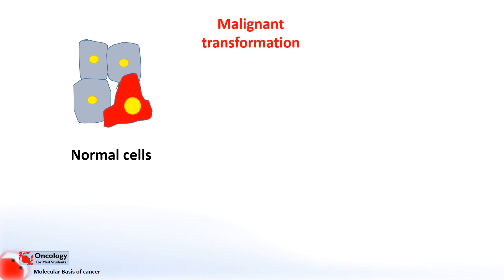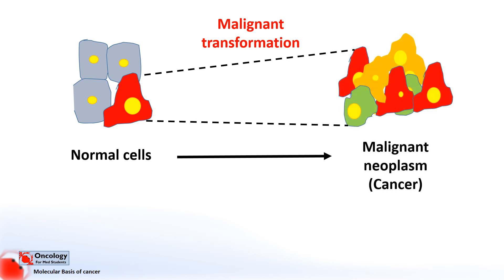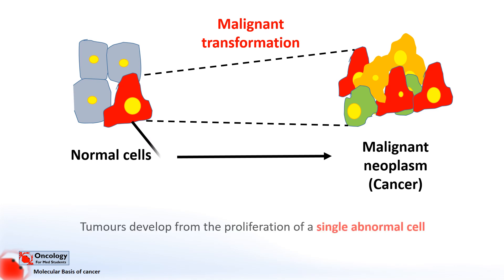Here we can see some normal cells, one of which becomes damaged or undergoes a malignant change or transformation and goes on to form a malignant neoplasm or cancer. The first important concept is that tumours develop from changes within one single cell. If you could trace back the generations of all the cells within the tumour, you would find that they all have a common ancestor — in this case the red cell here on the left. As the damaged cell divides, it passes on the changes and the abilities those changes have given it to the following generations of tumour cells.